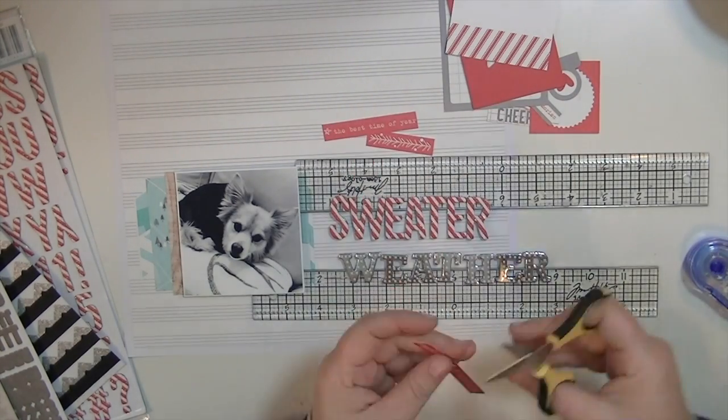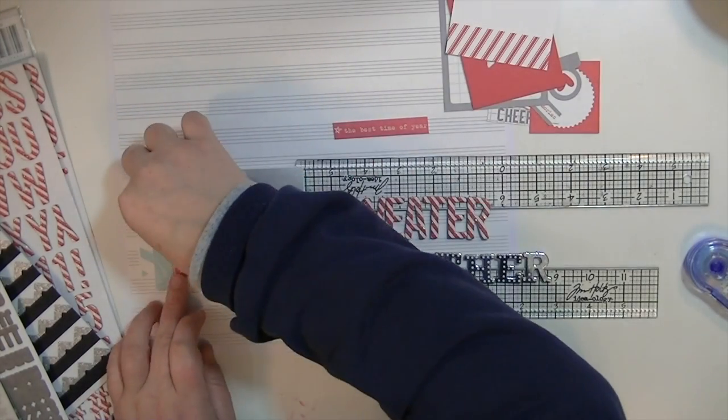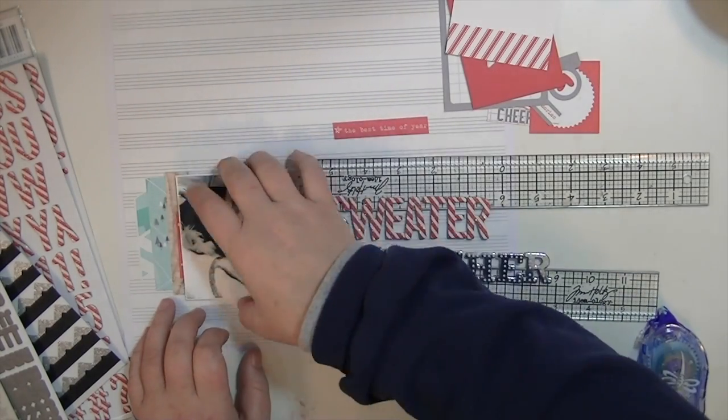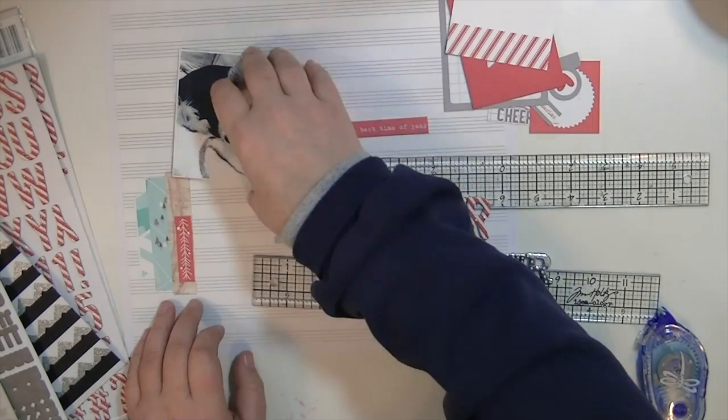So at some point I decided to add some red to this layout and I'm taking one of the branding strips from one of the LE Studio papers and cutting it up and using little pieces of that to add some red accents.